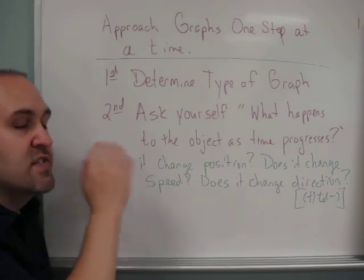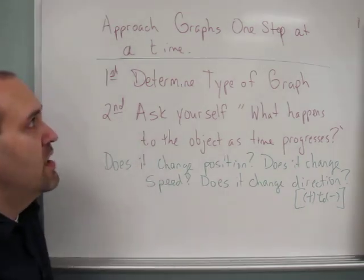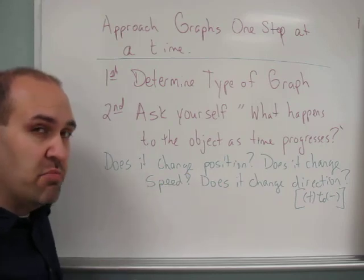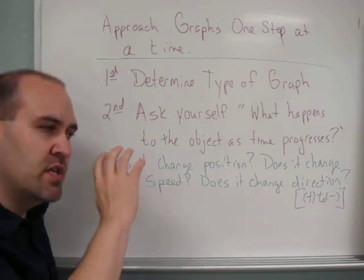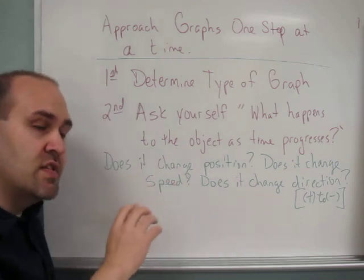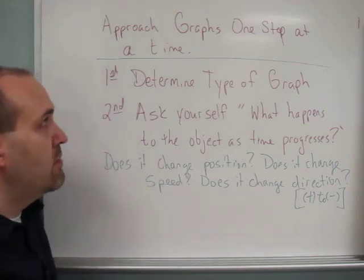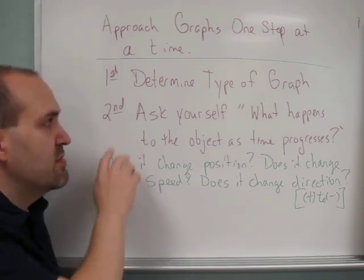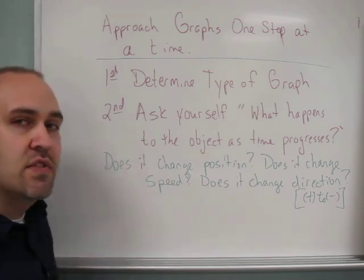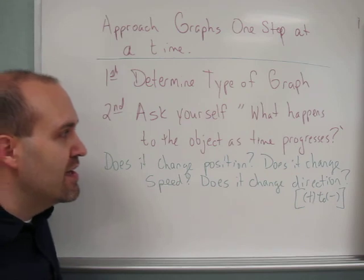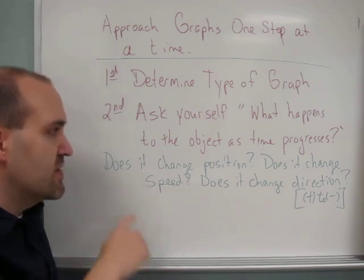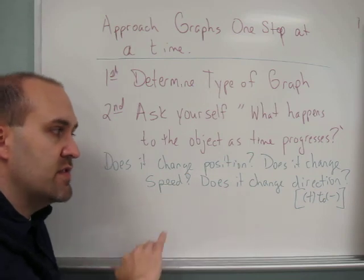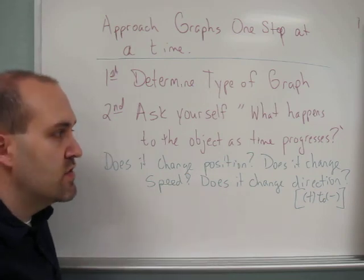To sum up for the graphs, take these one step at a time. It can look complicated, and it's hard to switch between thinking about position-time and velocity-time. Your first step is to determine the type of graph. The second step is to ask yourself what happens to the object as time progresses — does it change position, change speed, change direction, maybe from positive to negative? We'll practice with this in the lab and in the classroom.